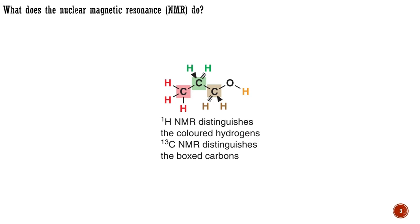Nuclear magnetic resonance (NMR) allows us to detect atomic nuclei and say what sort of environment they are in within the molecule. In a molecule such as propanol, the hydrogen atom of the hydroxyl group is clearly different from the hydrogen atoms of its carbon skeleton — it can be displaced by sodium metal, for example. Proton NMR can easily distinguish between these two sorts of hydrogens by detecting the environment the hydrogen's nucleus finds itself in. Moreover, NMR can also distinguish between all the other different sorts of hydrogen atoms present.